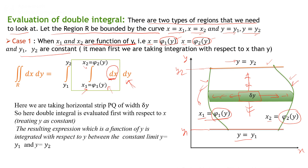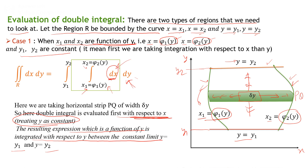Notice that we take a strip PQ with a small region Δy. The double integral is evaluated first with respect to x, treating y as a constant. Then the resulting expression, which is a function of y, is integrated with respect to y between the constant limits y = y₁ and y = y₂. That is how we evaluate the double integral when x₁ and x₂ are functions of y and the y limits are constant.